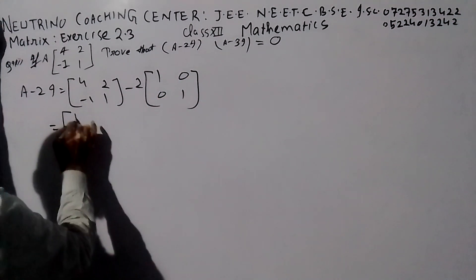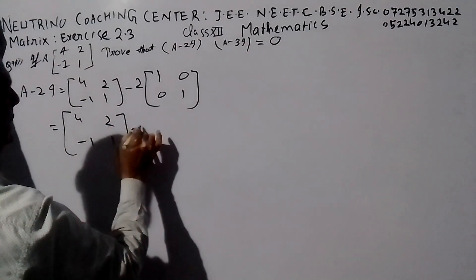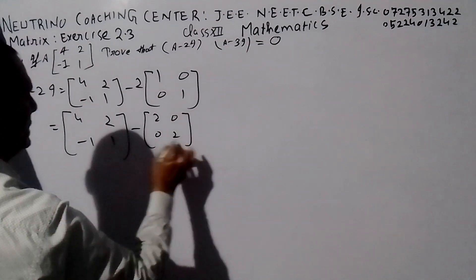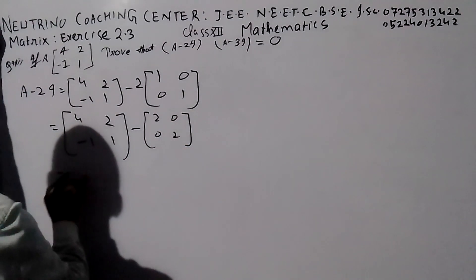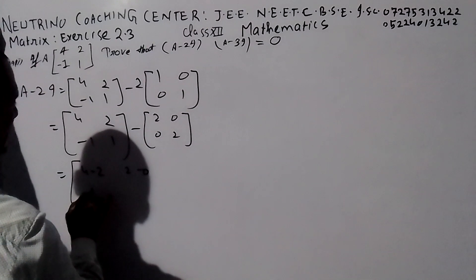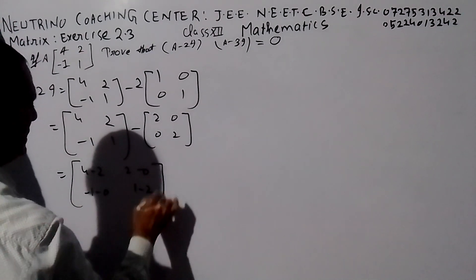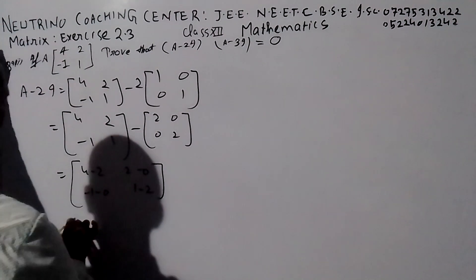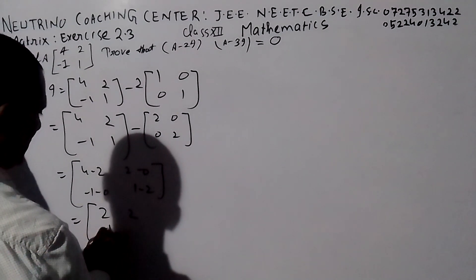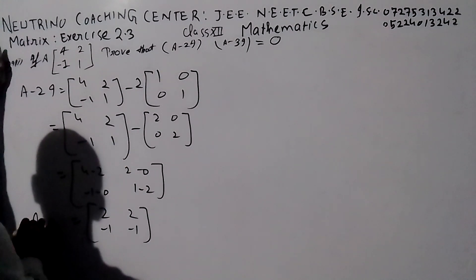This point is 4, 2, minus one, one, and here we have two, zero, zero, two. Subtraction: 4 minus two, 2 minus zero, minus one minus zero, one minus two, and here we have two, two, minus one, and here we have minus two, minus.